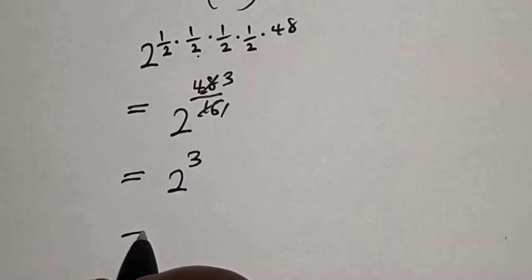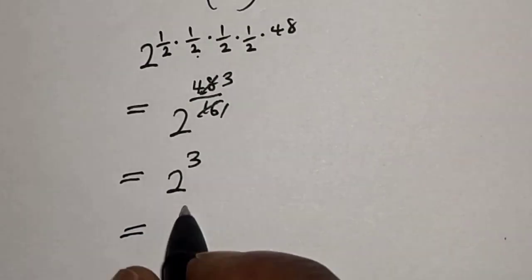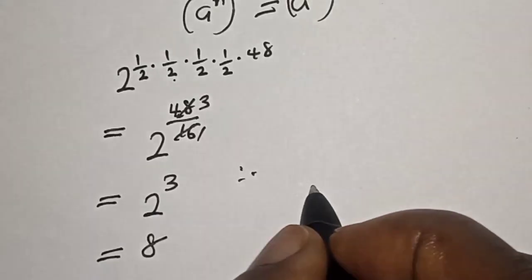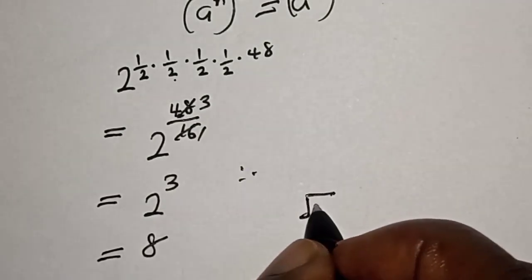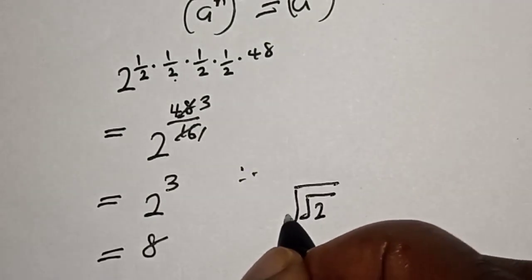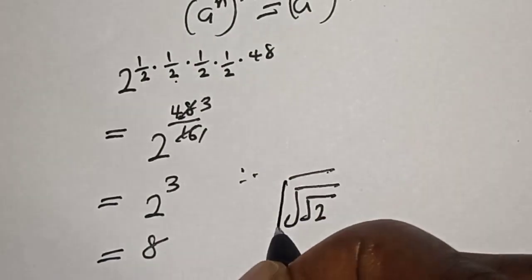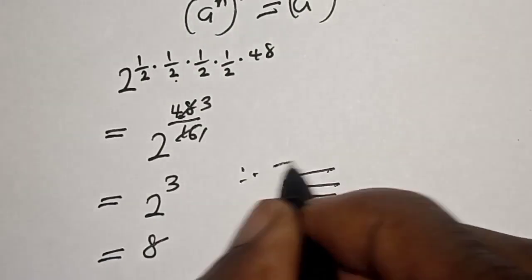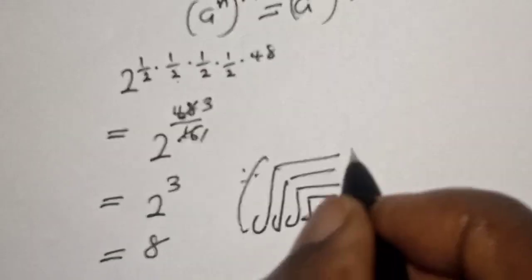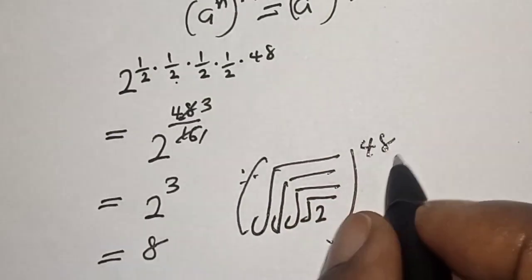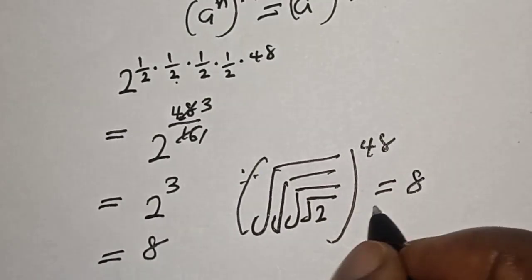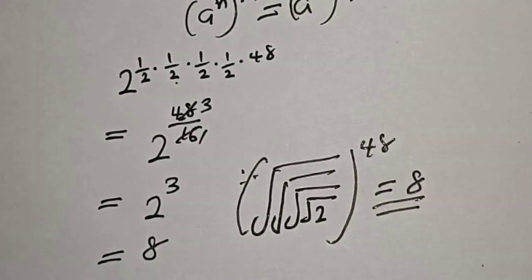And 2 raised to the power 3 is equal to 8. Therefore, the square root of 2 with another root, with another root, with another root, all raised to the power 48, is equal to 8. That is our final answer.